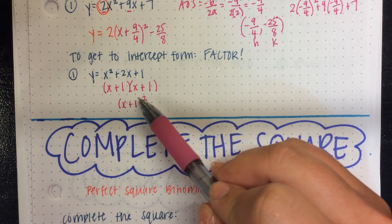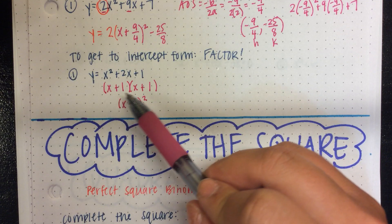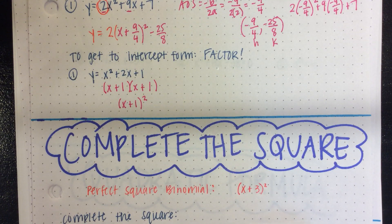So factor, and you get to intercept form. Now, technically, when you have it written like this, it's intercept form and vertex form at the same time, because you have an H, and then your K would have been 0.